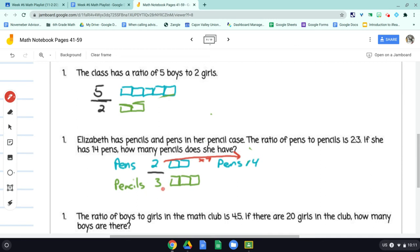So whatever I multiply the first part of the ratio by, I've got to multiply the second part of the ratio by. So I'm going to multiply 3 times 7 as well. She's going to have more pencils than pens because we know the ratio is 2 to 3. 2 pens for every 3 pencils. So pencil-wise, if she has 14 pens, she's going to have 21 pencils.